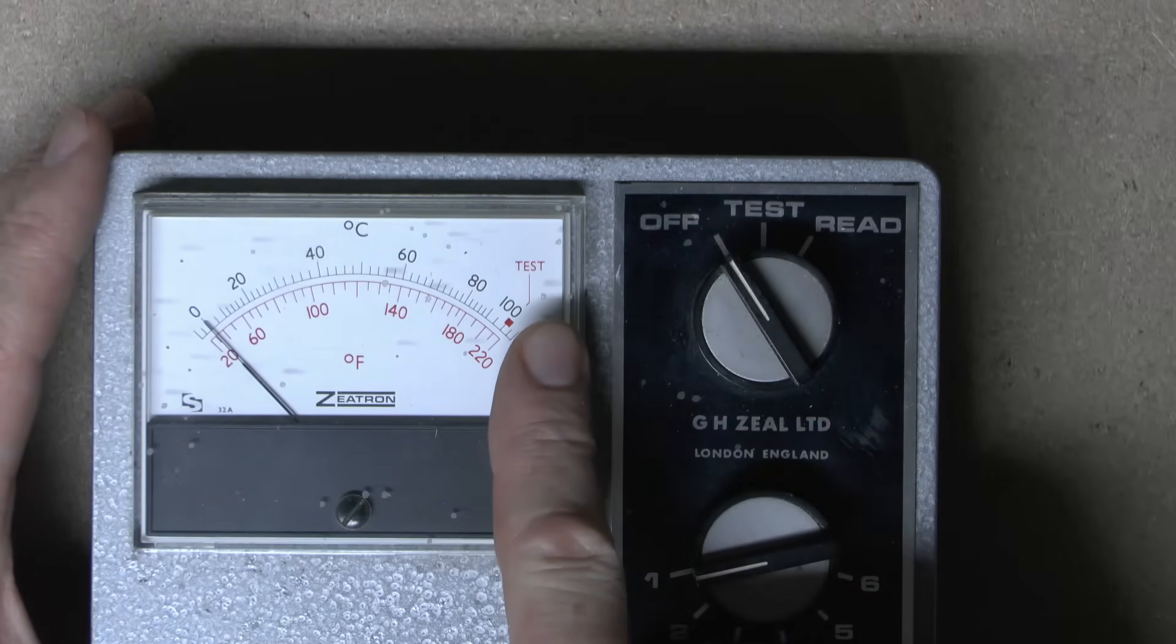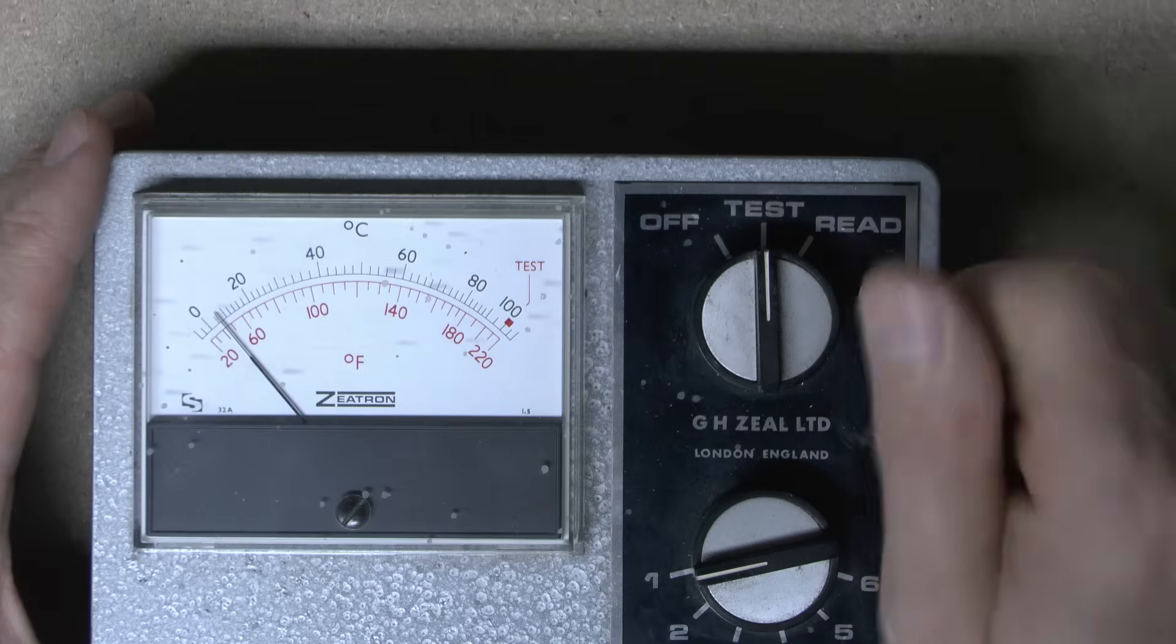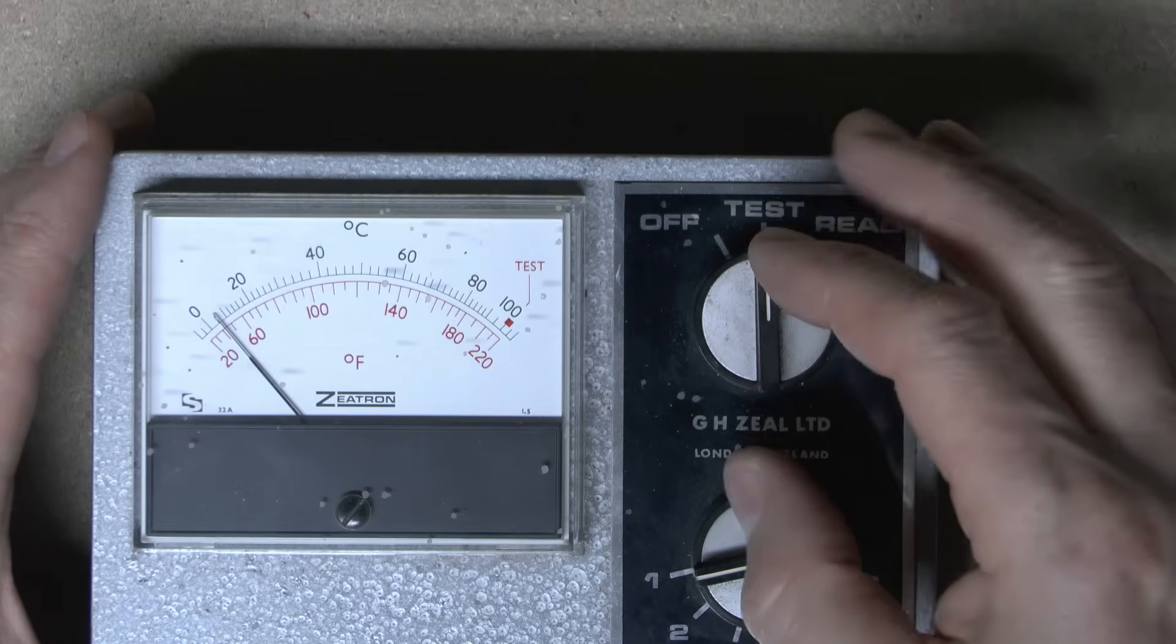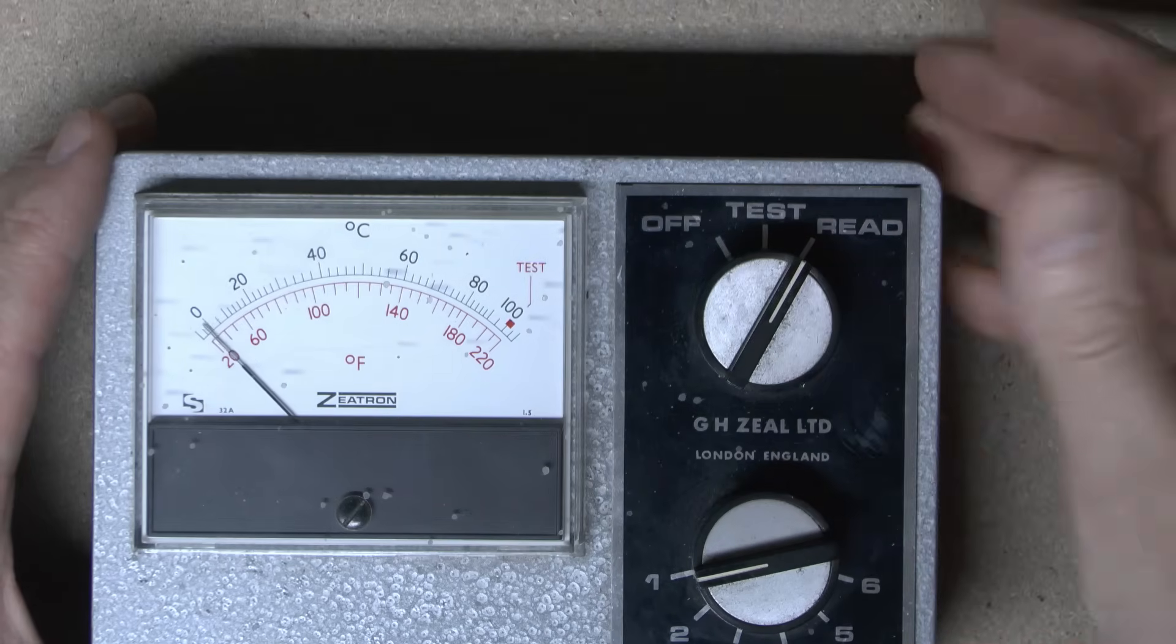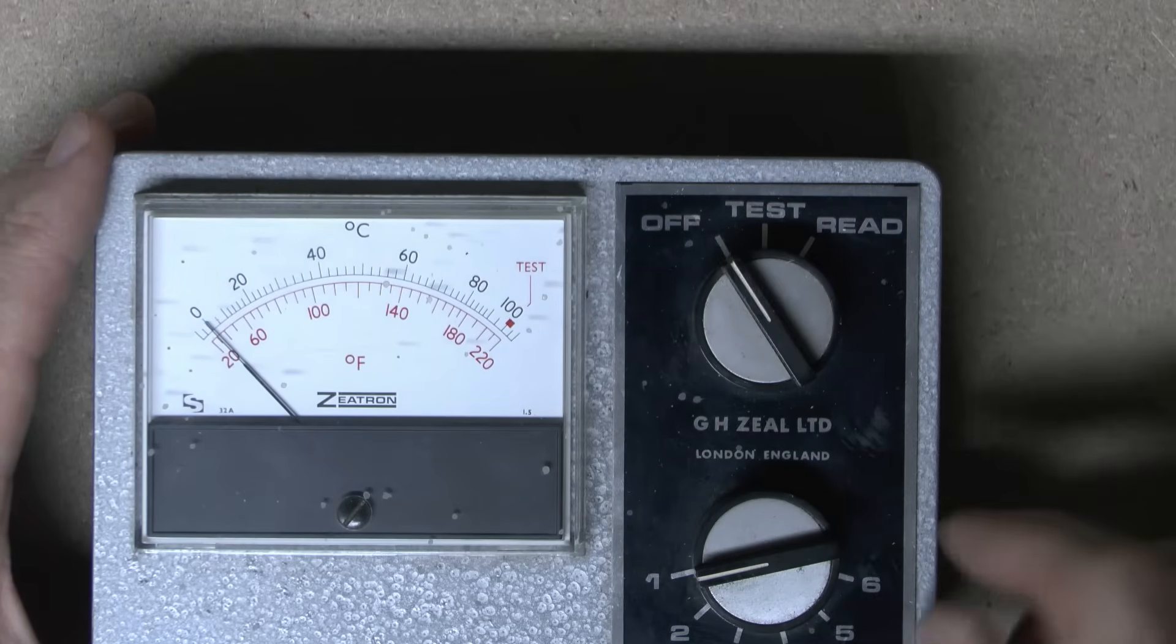And then one to six presumably is going to be for the six inputs here along the bottom. So selecting which of the six test leads you're going to be using. And then top here, test is marked. So if this has a battery in, you would expect it to go up to there. Well, it seems to have some kind of battery in, but as you can see, barely moves at all. So obviously whatever battery this has got is completely bust. And then in the reading position, it will obviously read the appropriate connection.